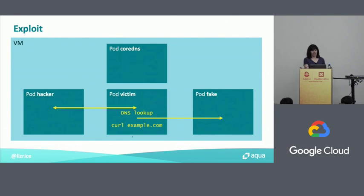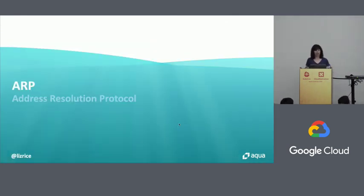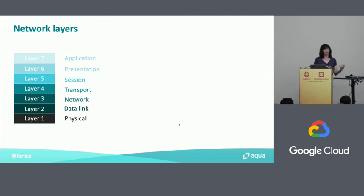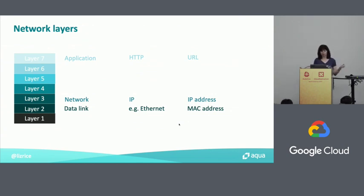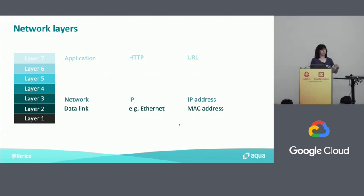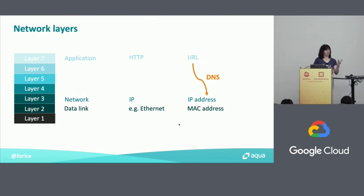Let's talk about what's actually happening here, starting with address resolution protocol. To discuss that, let's briefly remind ourselves about the seven layers of networking. We really only care about three layers: the application layer where we make the HTTP request, the network layer that deals in IP traffic, and the data link layer which deals with Ethernet packets. When our victim pod makes a request to a URL, DNS translates the human-readable name into an IP address, and then address resolution protocol takes that IP address and maps it to a MAC address.